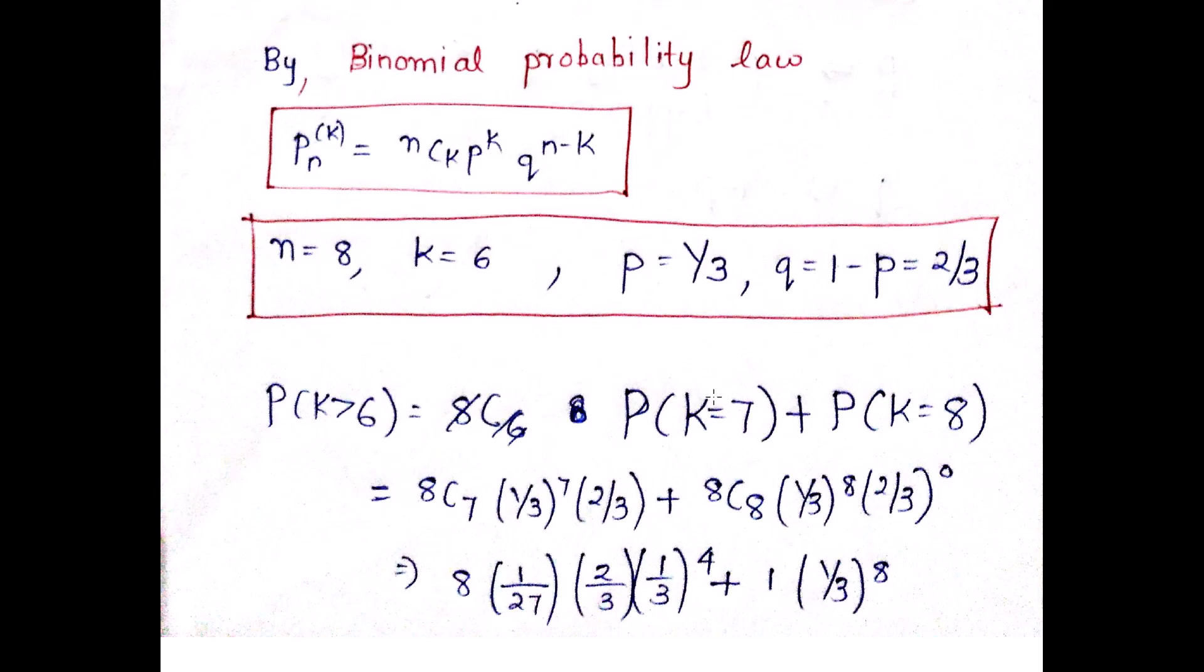The number of success can be 8 also. So it is 8C7, p raised to 7 and q raised to n minus 7, plus 8C8, p raised to 8 and q raised to n minus 8. And just try to find out the answer.